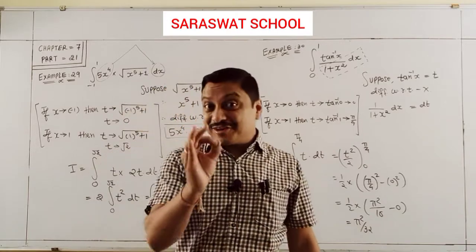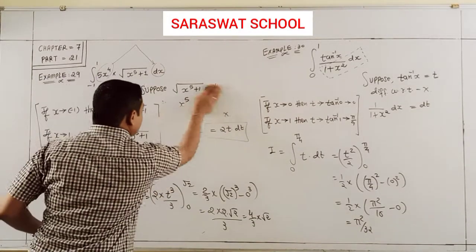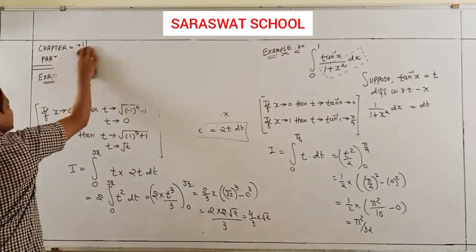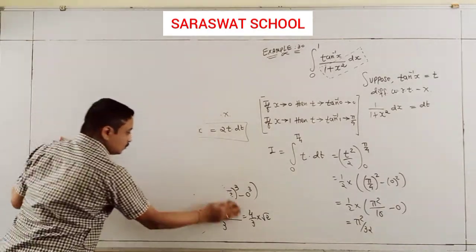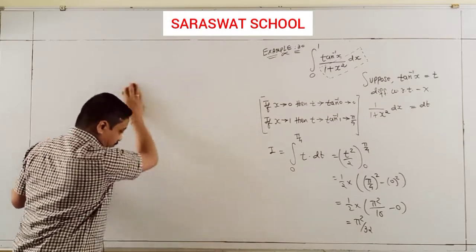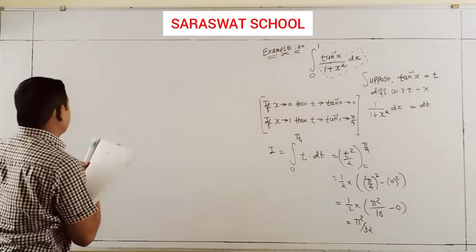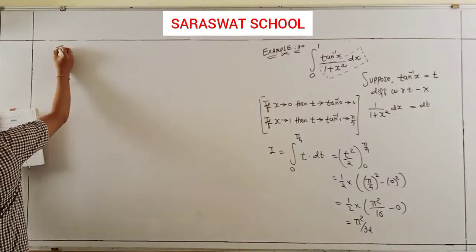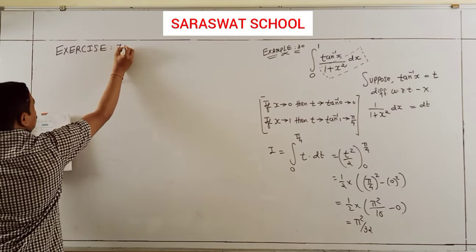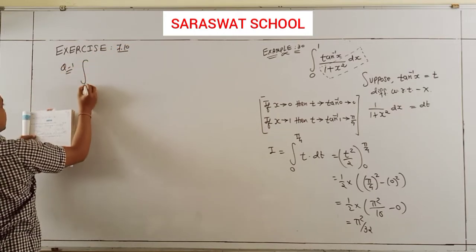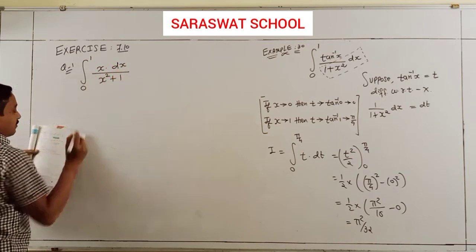Students, I slowly start after this example. Our exercise is 7.10 — a very easy but very big exercise. First question: integrate from 0 to 1, x dx divided by x² plus 1.